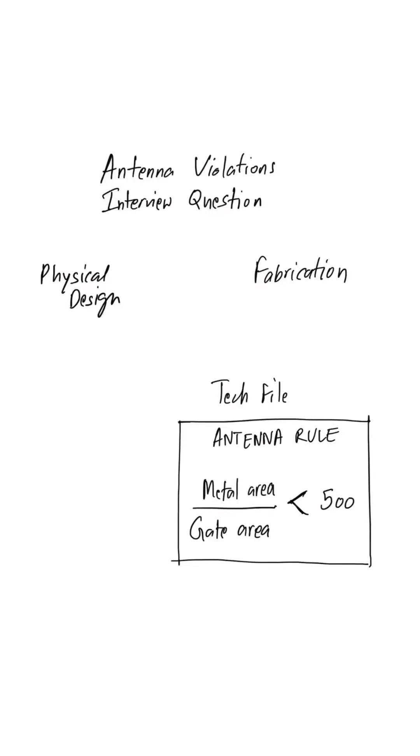One of the many interview questions regarding antenna violations is that antenna violations happen during the fabrication step. Then how do we identify any potential antenna violations beforehand at the physical design step itself and fix them?